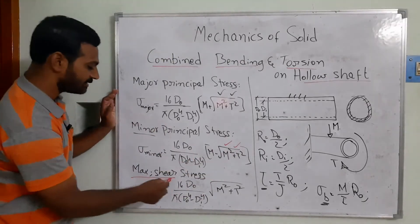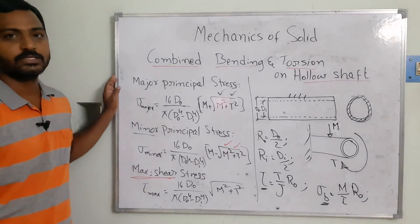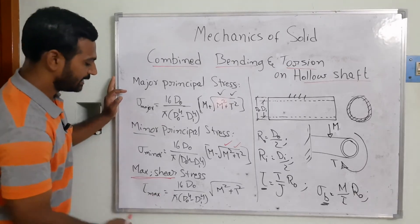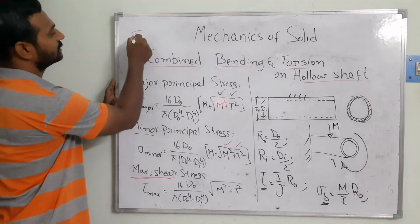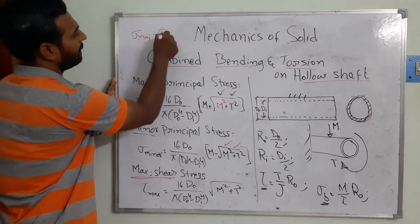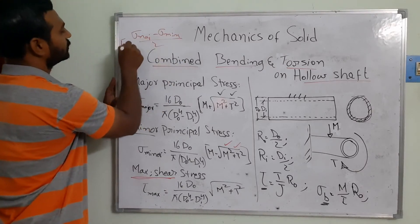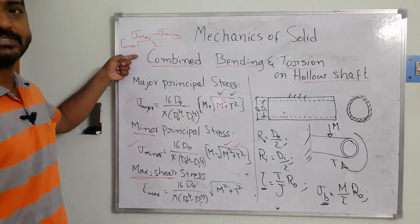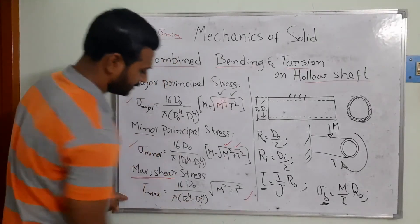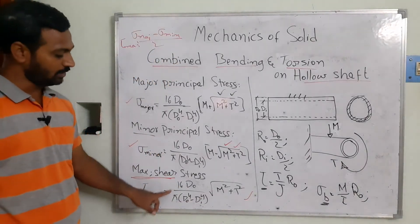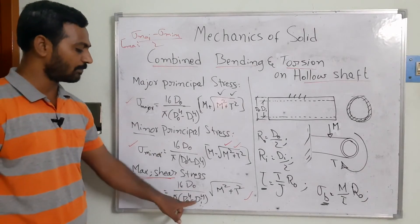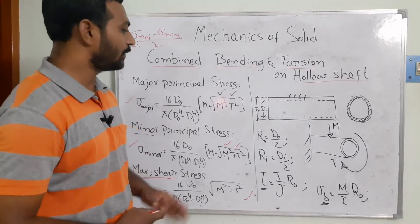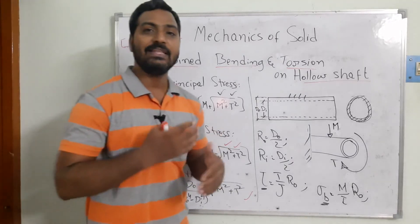The third one is the maximum shear stress. The maximum shear stress is: τ_max = (σ_major − σ_minor) / 2. By substituting the major and minor stress equations into this expression, we finally get: τ_max = (16 × D-not) / (π × (D-not⁴ − D-i⁴)) × √(M² + T²). This is how we derive the mathematical model for combined bending and torsion.